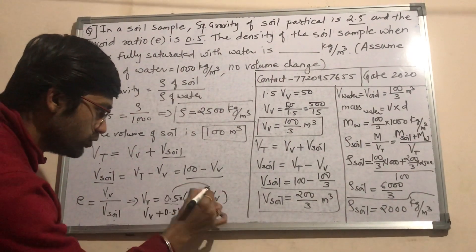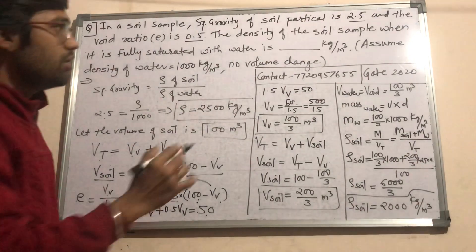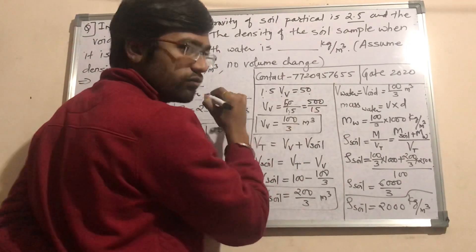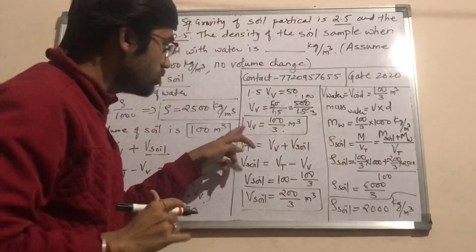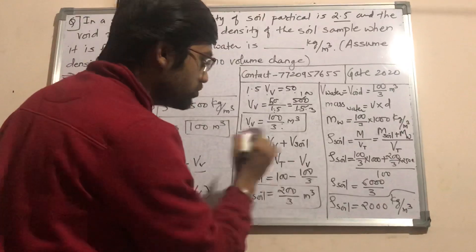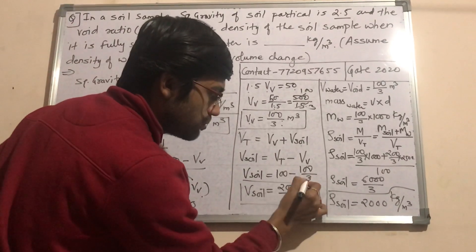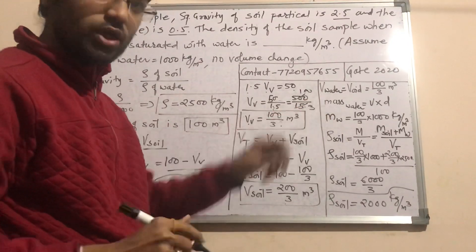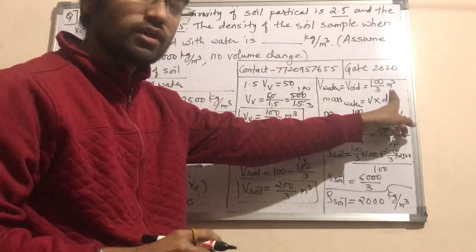So Vv equals 0.5 into (100 minus Vv). Shifting to the left hand side: Vv plus 0.5 Vv equals 0.5 into 100, giving 50. So 1.5 Vv equals 50, meaning Vv equals 50 divided by 1.5, which equals 100 by 3 meter cube. Substituting back, volume of soil equals 100 minus (100/3) = 200/3 meter cube.